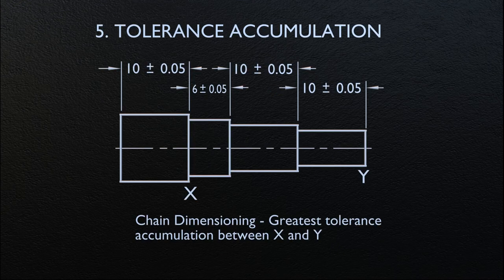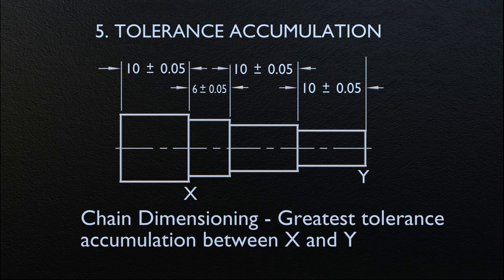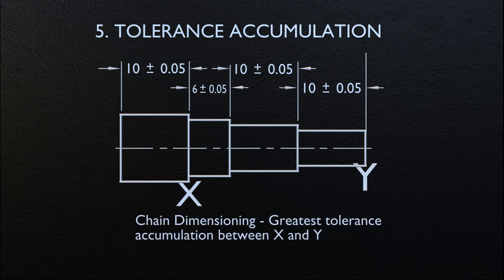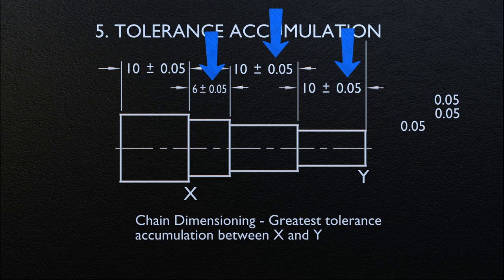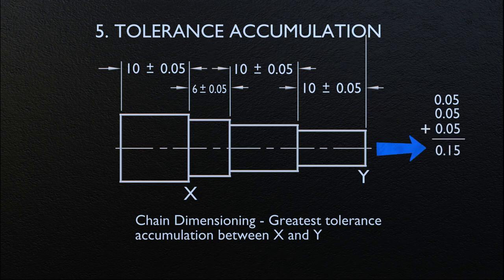From tolerance accumulation, we are going to discuss three methods: chain dimensioning, baseline dimensioning, and direct dimensioning. Let's consider chain dimensioning first. The maximum variation between two features is equal to the sum of the tolerances on the intermediate distances — this results in the greatest tolerance accumulation. As seen in the illustration, the tolerance accumulation between surfaces X and Y is ±0.15.